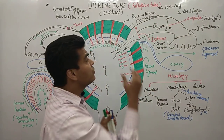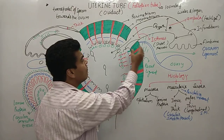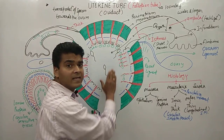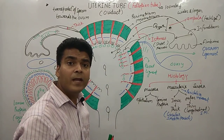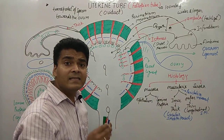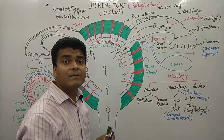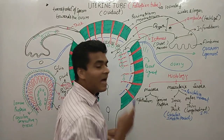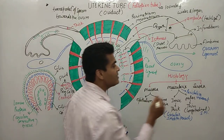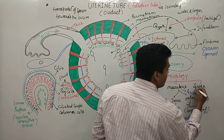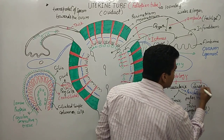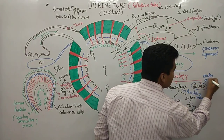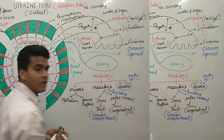The fertilized ovum travels to the uterus approximately 6–7 days after fertilization. The outermost layer is known as the serosa.